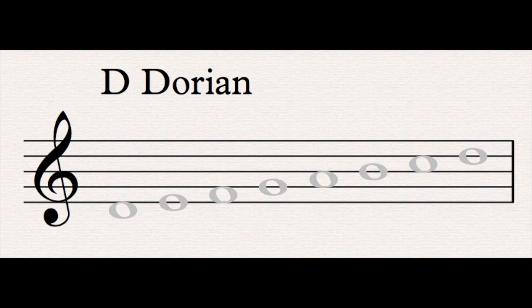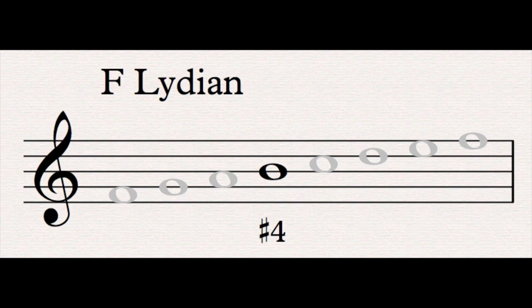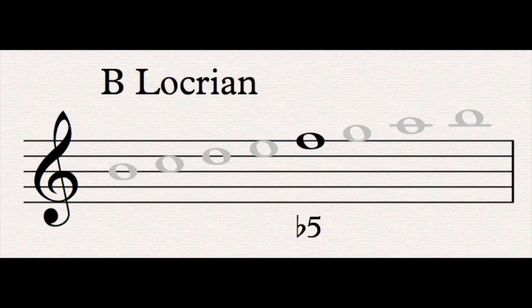D Dorian has the natural six as its characteristic pitch, and natural six in D Dorian is B. E Phrygian has the characteristic pitch of a flat two, which is F. F Lydian has the characteristic pitch of sharp four, a B. G Mixolydian has the characteristic pitch of a flat seven, which is F. A Aeolian has the characteristic pitch of flat six, also an F. And B Locrian has the characteristic pitch of a flat five, which again is F. The way we think about functional harmony within these modes is thinking about which chords have that characteristic pitch within a given mode and which chords don't.